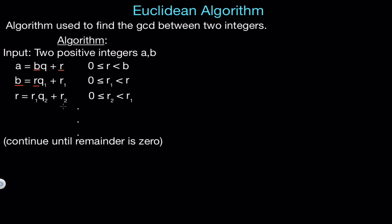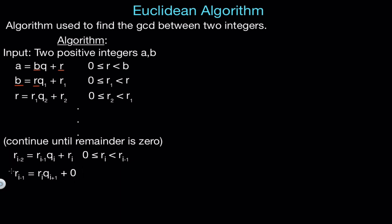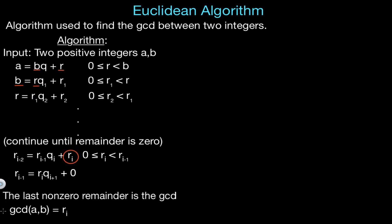We write R as a multiple of R1 plus a new remainder R2, and we continue doing this until the remainder is equal to 0. So for some R sub i minus 2, we write that as R sub i minus 1 times Q sub i plus R sub i, and then the very next step gives R sub i minus 1 equals R sub i times Q sub i plus 1, where the remainder is 0. The point is to continuously repeat this process until the remainder is 0, and the last non-zero remainder is the GCD. So the GCD of A and B is equal to R sub i.